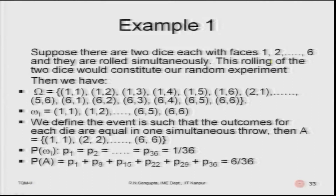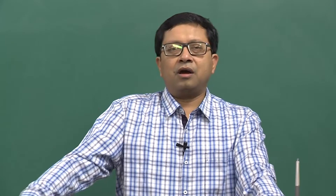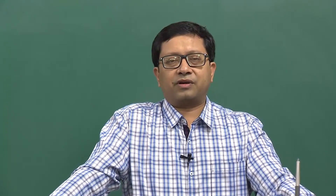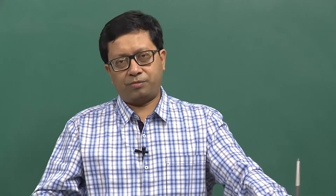The event A is defined such that outcomes for each die are equal in one simultaneous roll, so A = {(1,1) to (6,6)}. The probability of each sample point is 1/6 × 1/6 = 1/36. With 6 favorable events, the total probability is 6/36 = 1/6.